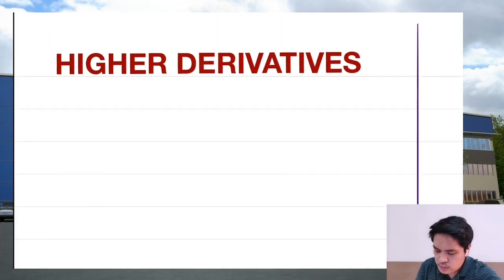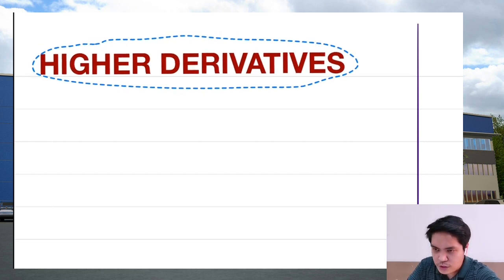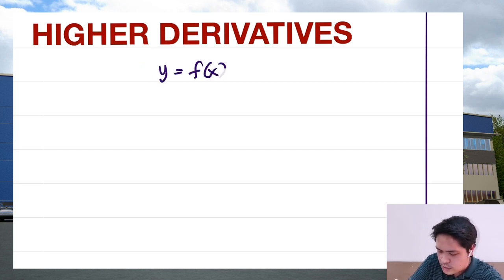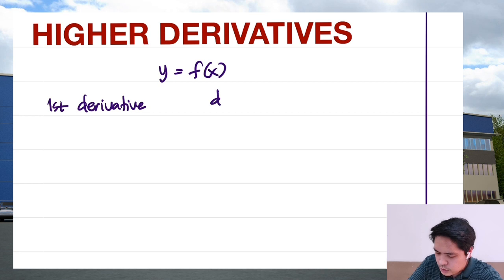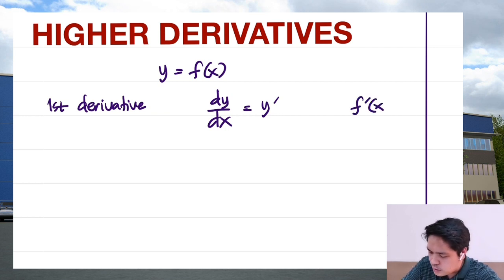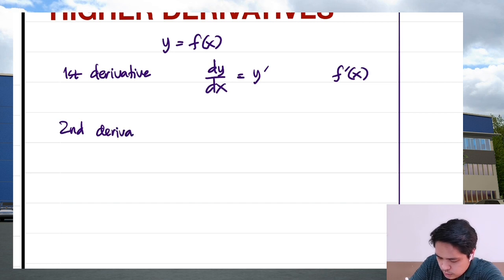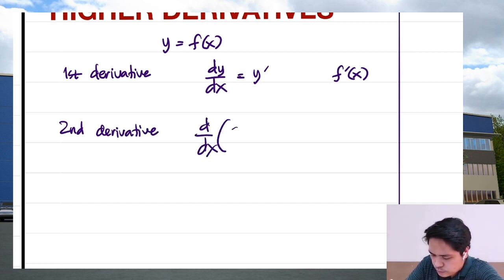This next section is about higher derivatives. Higher derivatives are just derivatives of derivatives. If we have a function y equal to f of x, for the first derivative we have dy/dx, or y prime, or f prime of x. If you want to get the derivative of that derivative, that would be the second derivative — the second derivative is just the derivative of the first derivative.